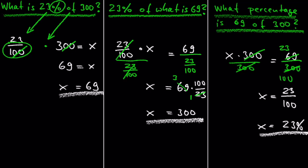And the third case is when we ask the question, What percentage is 69 of 300 equal to? In this case, the unknown x is the number with the percentage sign on the left-hand side of the equation.